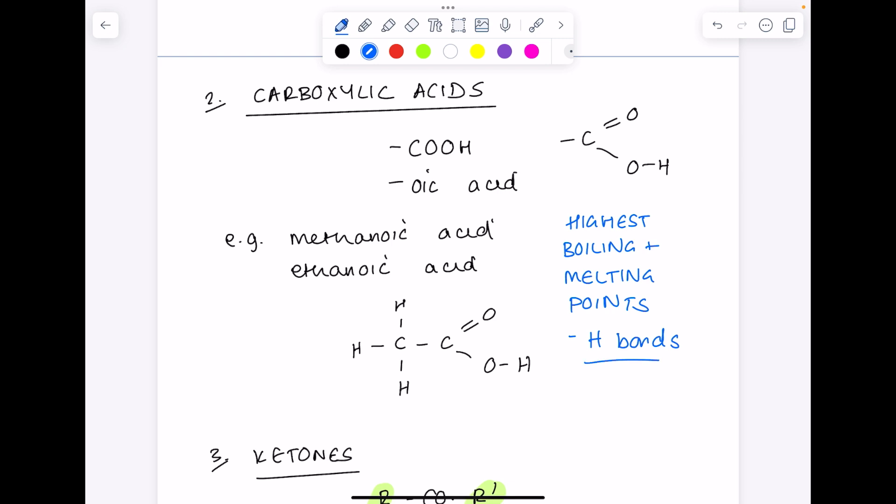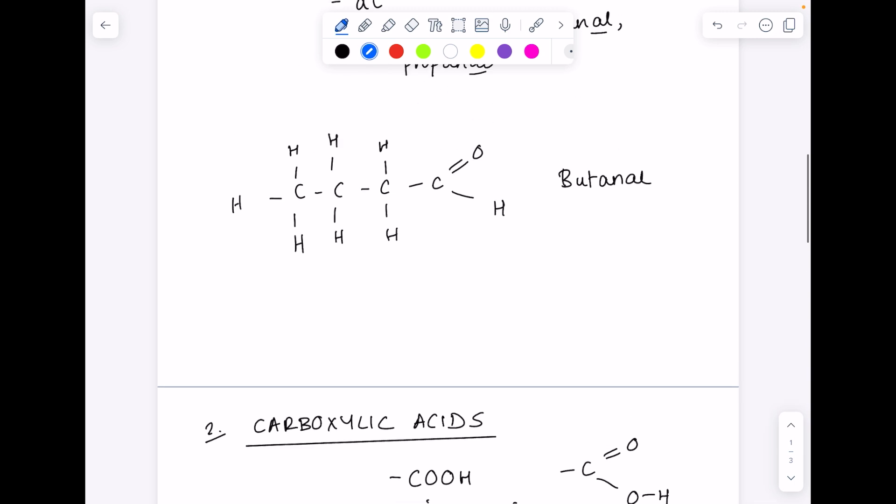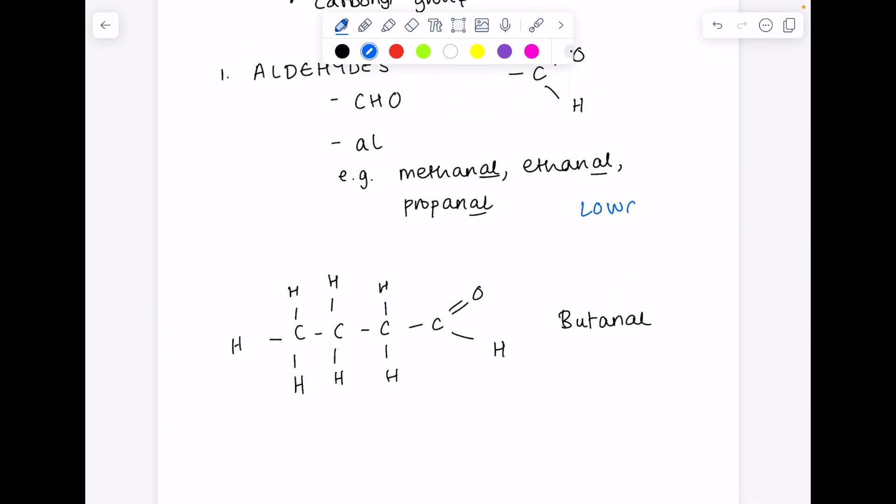Because of the all-important hydrogen bonds that exist between the molecules. Remember, hydrogen bonds occur between hydrogen and a highly electronegative element such as nitrogen, fluorine, and oxygen. Ketones and aldehydes have lower melting and boiling points simply because they have permanent dipole-dipole forces, which are weaker than hydrogen bonds.